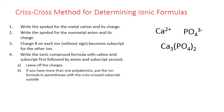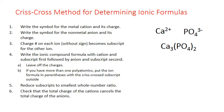We leave off the charges on the final formula since it's an electrically neutral unit. Two to three is the lowest whole number ratio, and checking the charges: three calciums each with +2 gives a total of +6, and two phosphates each with −3 gives a total of −6. Plus 6 and minus 6 balance out.